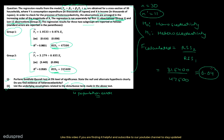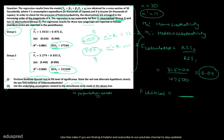Now we need the critical value of F. The numerator degrees of freedom is N' minus K = 11 minus 2 = 9, and the denominator degrees of freedom is also 9. The level of significance given is 5%.